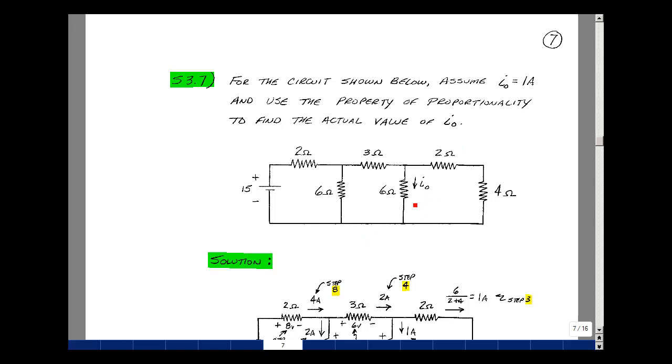But let's do it using the unit method. In other words, let's set this current equal to 1 amp and figure out what the voltage needs to be to make that happen. And then we can figure out a proportionality factor and then solve for the actual value of I0.